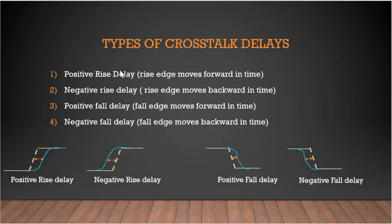Here are the different types of crosstalk delays which are possible. One is positive rise delay, when a positive delay has been introduced on a victim net which was switching from 0 to 1. Similarly, negative rise delay is when a negative delay has been introduced on a victim net switching from 0 to 1. And positive fall delay and negative fall delay occur on a net which was switching from 1 to 0.